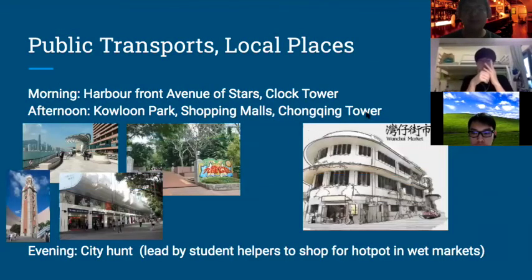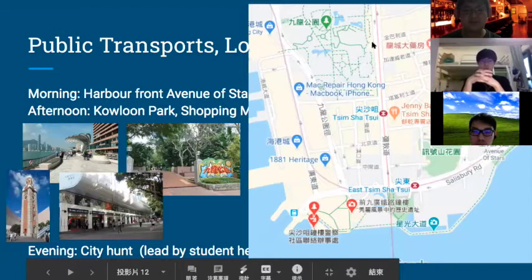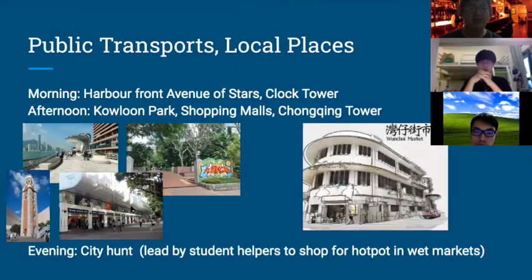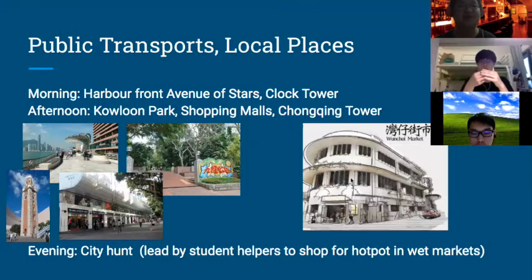There is a map for day three. In the morning, we walk through the Avenue of Stars, then Cop Tower, and along the coast. In the afternoon, we go to Kowloon Park and the shopping areas nearby — one of our most interesting tours, visiting where local people would go. In the early evening, there's a city hunt: shopping in the wet market in Wan Chai, led by student helpers. The city hunt has two purposes — experiencing local shopping, and buying ingredients for our hot pot dinner.